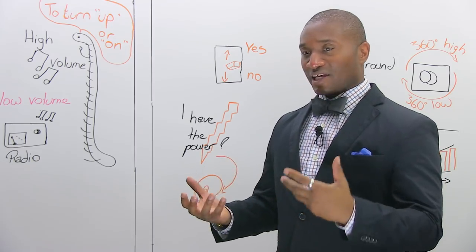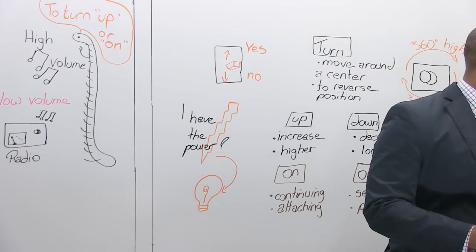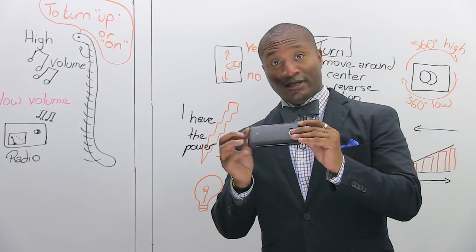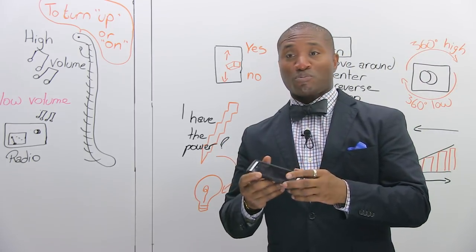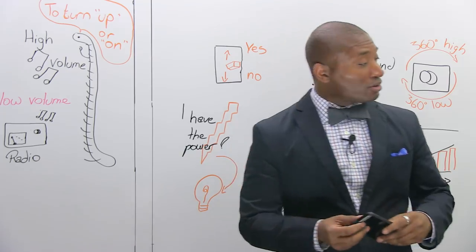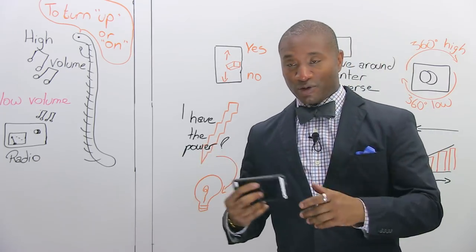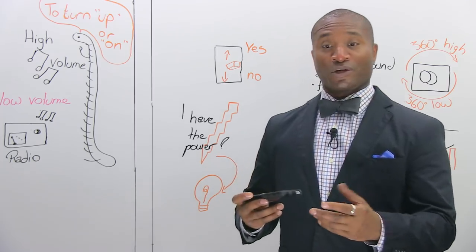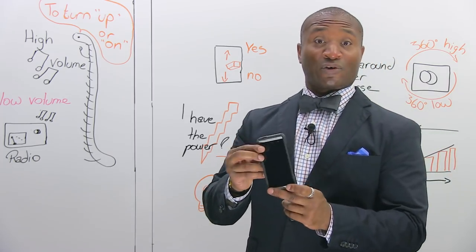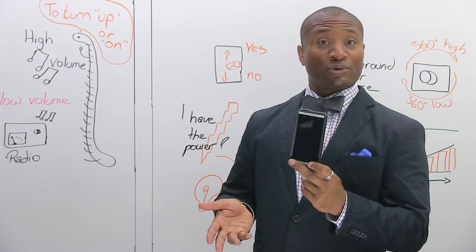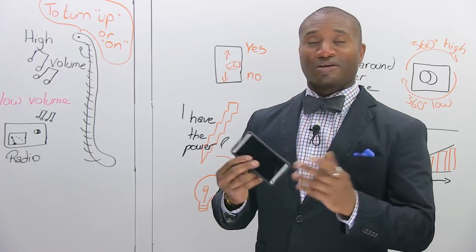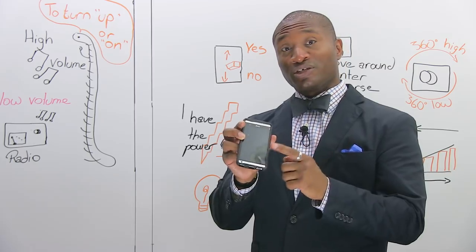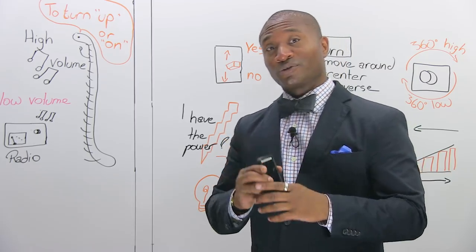When we talk about electronics, which could be something as simple as your cell phone, what happens is people want to use them. Which is fine if you're doing it for yourself, but when you're talking to other people and you want them to do something for you — you notice that this cell phone, would you say, down or off? That's the lesson we're going to do today: what do you say when you want to change the condition of this cell phone?